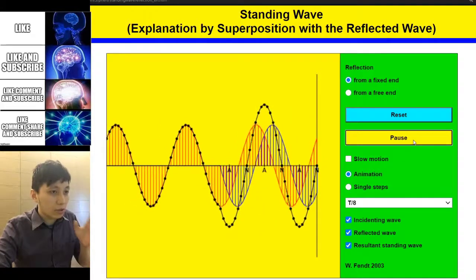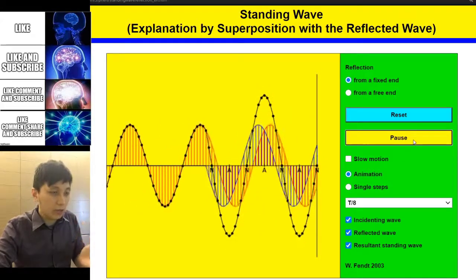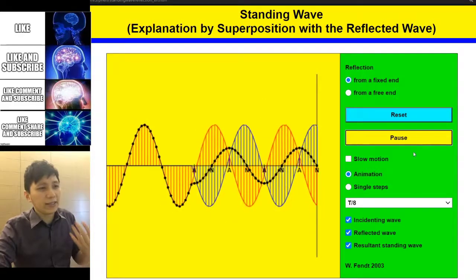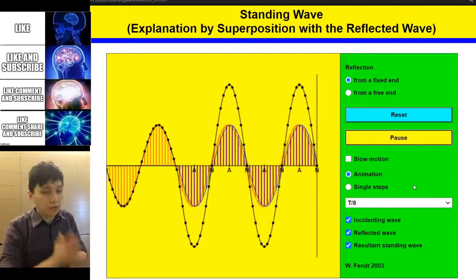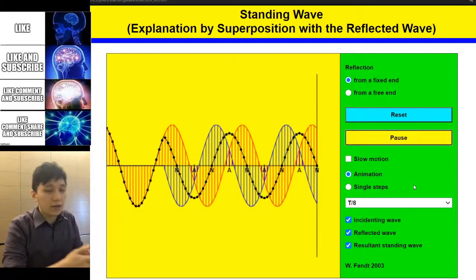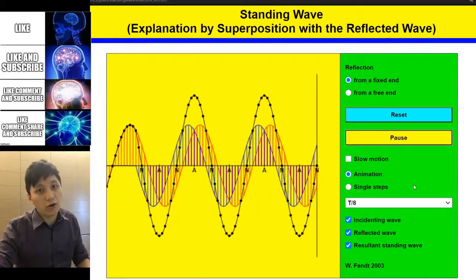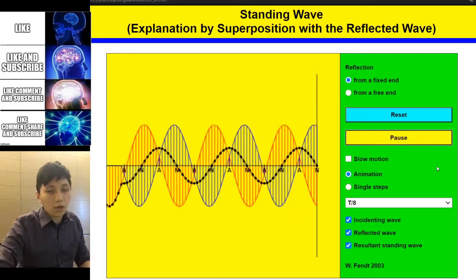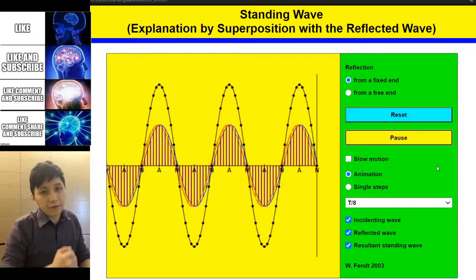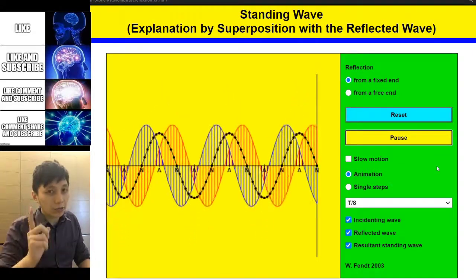And so now you can see more antinodes and nodes there. And the reason why they are nodes and antinodes, in fact, is something to do with constructive and destructive interference and the path difference you learned earlier. I will talk about that by the end of this video.